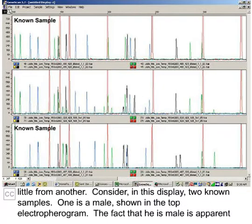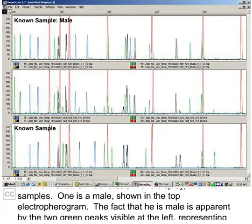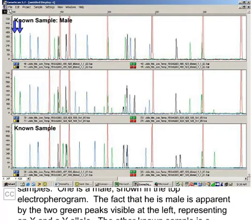One is a male, shown in the top electropherogram. The fact that he is male is apparent by the two green peaks visible at the left, representing an X and a Y allele.